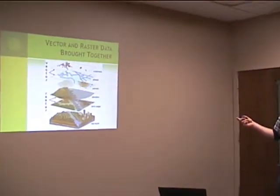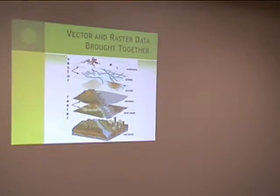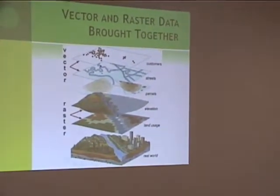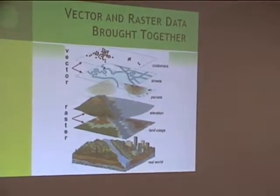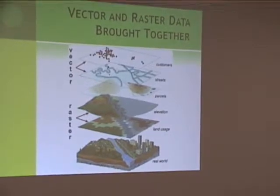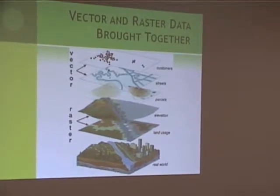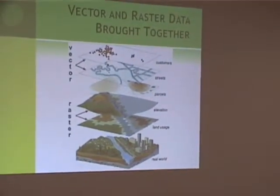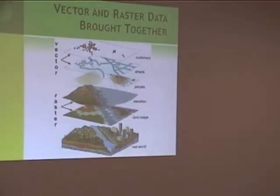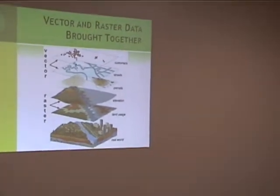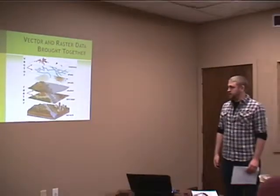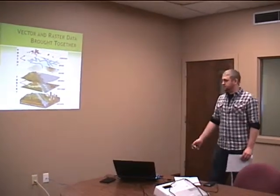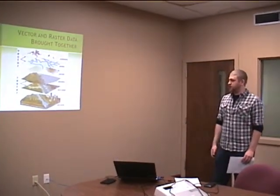This here is what happens when you combine vector and raster data — you can see the different layers. When you layer them together, it gives you a more real-world look for the map reader so they can relate a lot easier compared to just lines, dots, polygons, or squares.